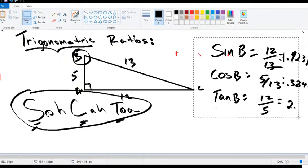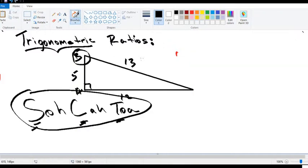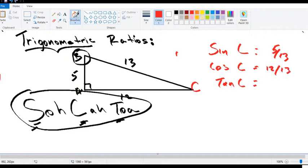Now let's say that I wasn't looking for the three ratios of B, but instead I was looking for sine of C, cosine of C, tangent of C. It's the same idea. Sine of C will be opposite over hypotenuse, which is 5 over 13. Cosine of C will be adjacent over hypotenuse, which is 12 over 13. Tangent of C will be opposite over adjacent, which is 5 over 12.